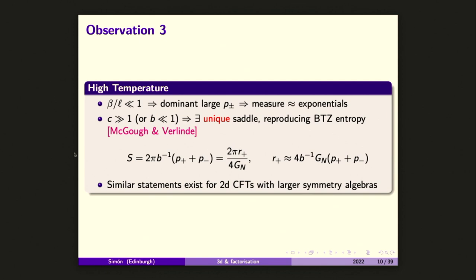If you take the grand canonical partition function as the full partition function of your theory, you can ask what is the high temperature behavior of this proposal. You expect these integrals to be controlled by large P+ and P−. This means the sinh functions appearing in the modular matrices can be approximated by exponentials, so there is a well-defined saddle. Since this is not a modular invariant theory, we will only find one saddle per P+ and P−, so you don't have the full SL(2,Z) set of saddles. When you evaluate the saddle, you reproduce the entropy of the BTZ black hole.